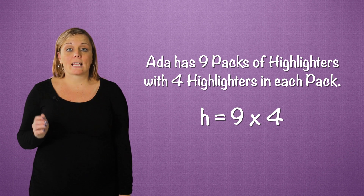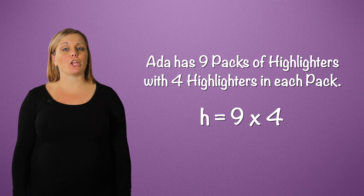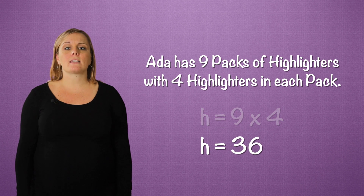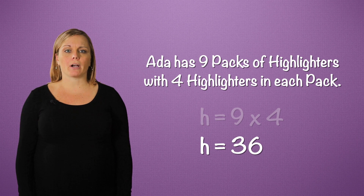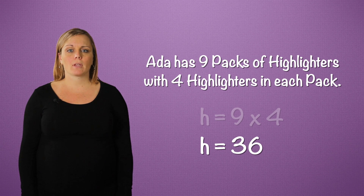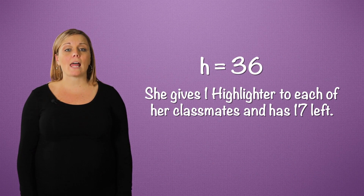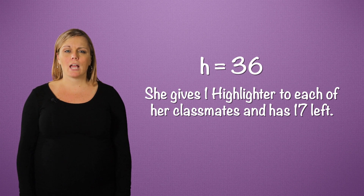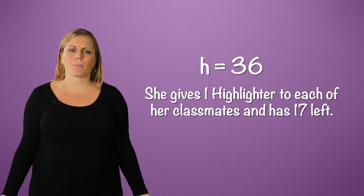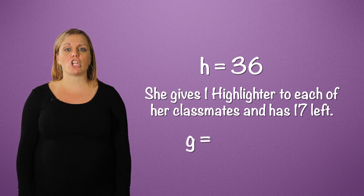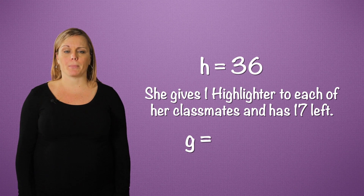What is the value of H? This is the unknown number — the number of highlighters Ada had at the beginning. And remember, after giving out a highlighter to each student, she has 17 left. How do we represent this word problem as an equation? Use G as the unknown number.